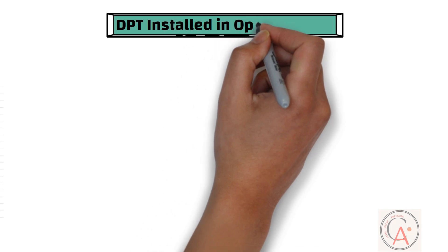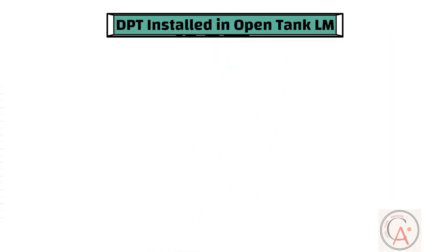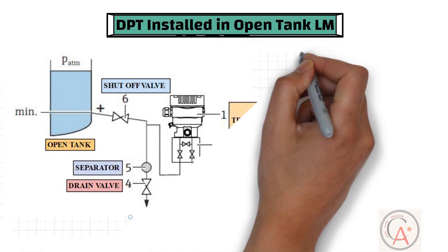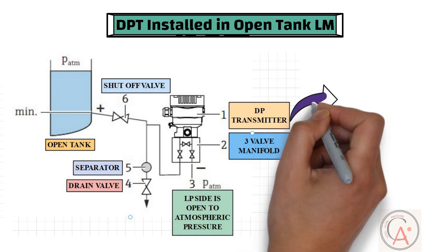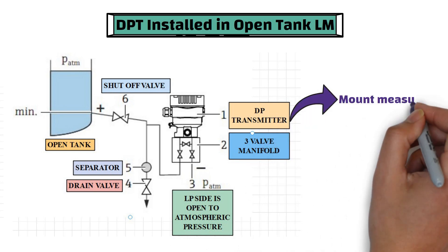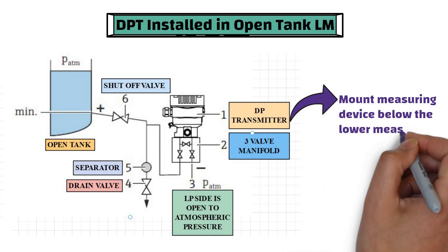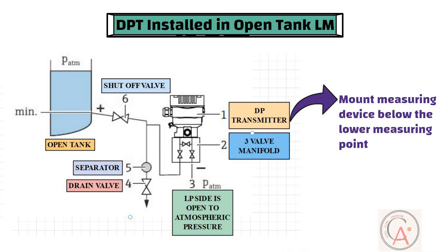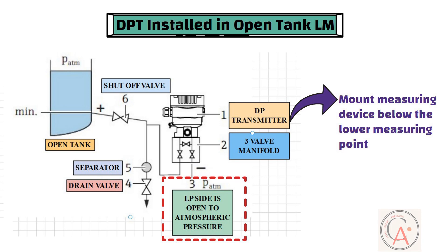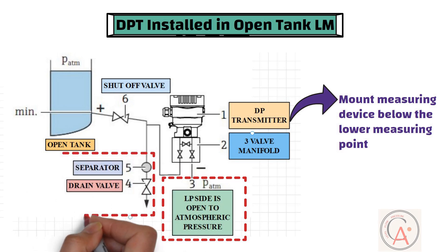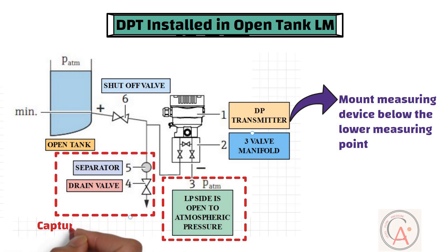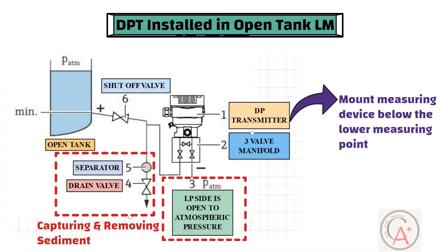First of all, let's start with the condition when a DP transmitter is installed for level measurement in an open tank. As you can see from the diagram, when liquid level measurement is done in an open tank, it is advisable to mount the measuring device below the lower measuring point so that the impulse lines are always filled with liquid. The low pressure side should be open to atmospheric pressure. Additionally, a separator and drain valve is useful for capturing and removing sediment when measuring media with solid parts such as dirty liquids.